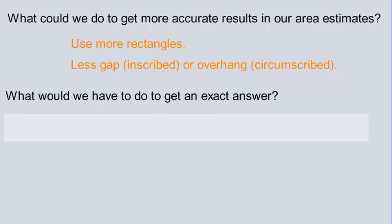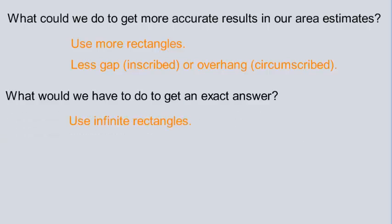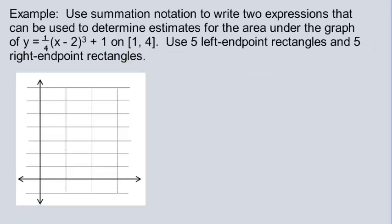So what would we have to do to get an exact answer? Theoretically, if more rectangles equals more accuracy, then an exact answer — which is perfect accuracy — means you'd have to use a whole ton of rectangles. Specifically, you'd have to use infinite rectangles. And that's where we're approaching in this chapter. We won't get there today, but we'll get there soon. In this next example, we won't compute a number answer — they're just asking us to write two different expressions using sigma summation notation to show area under this curve over this interval.